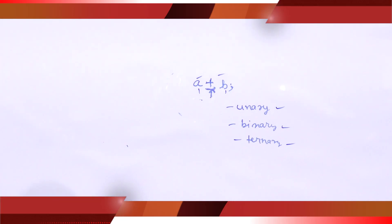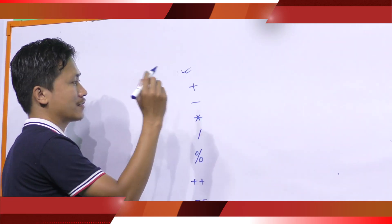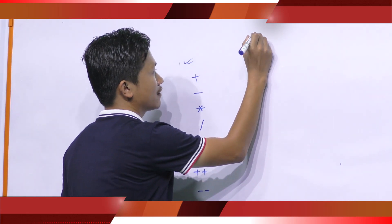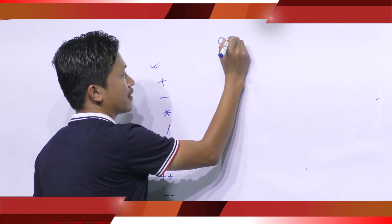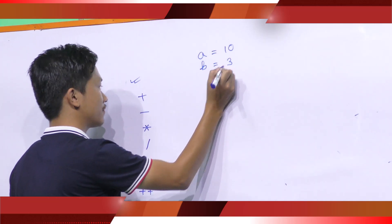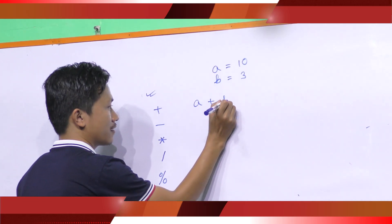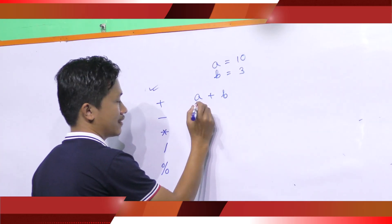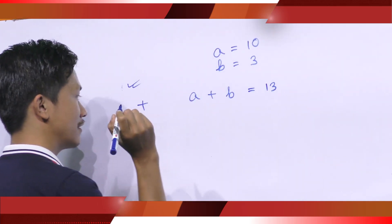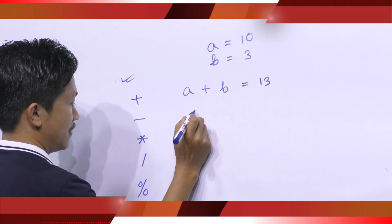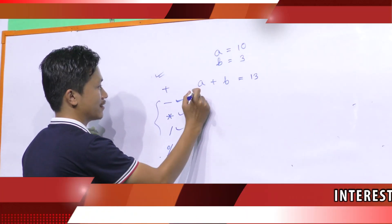Let's come to arithmetic operators. There are eight arithmetic operators in C. First one is plus. For example, if we have two integer variables A and B which have value 10 and 3, then A plus B means add these two values, so it will return 13. Likewise, subtraction, multiplication, and division work the same as addition.